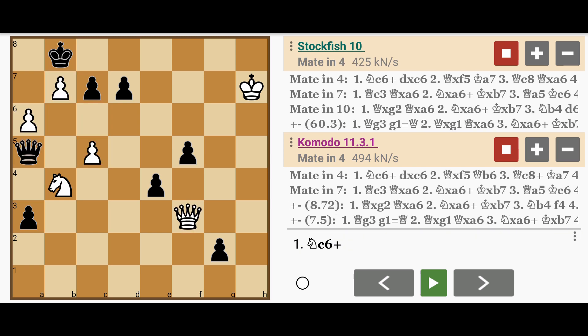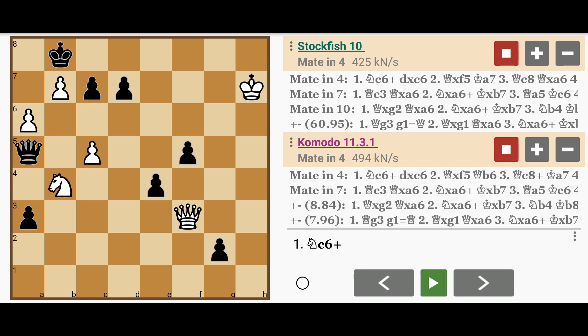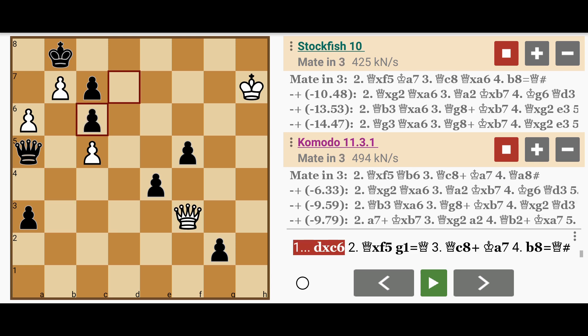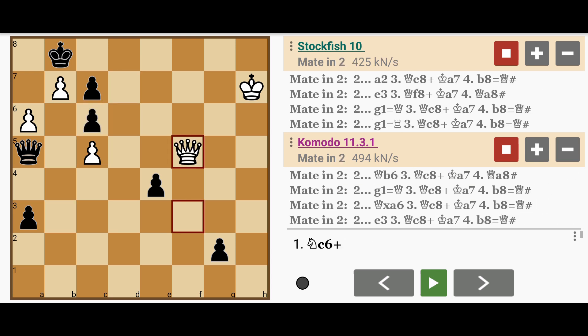The original solution is not only the shortest but also the most appealing: knight to c6 check, Black must capture the knight, queen captures f5, and there's no way to stop queen to c8 followed by mate.